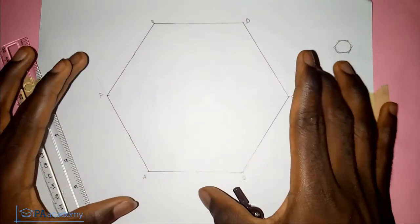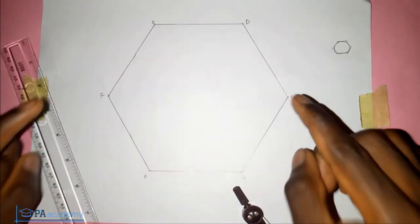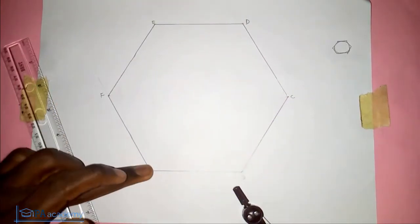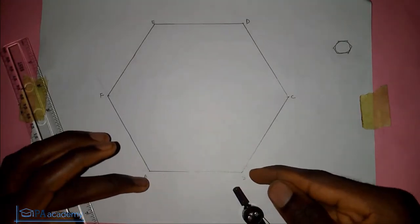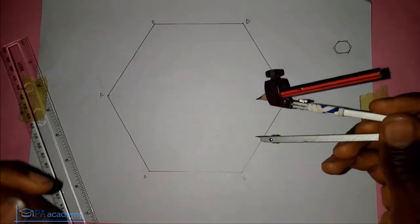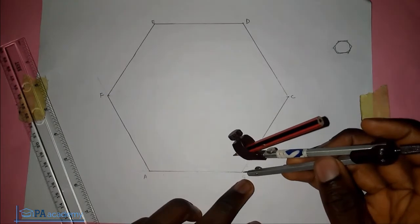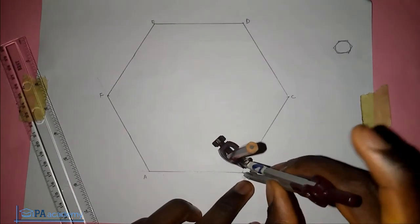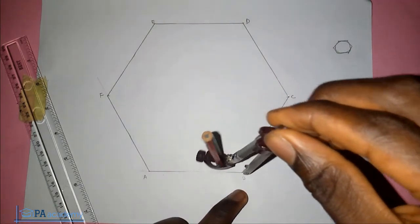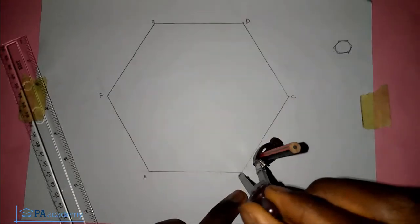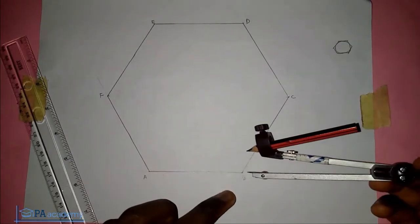To inscribe a circle inside this hexagon, we are going to bisect any two angles. The angles we are going to be using are angle A and angle B. To bisect angle B, pick your compass at any convenient length. Put it at point B and draw an arc.